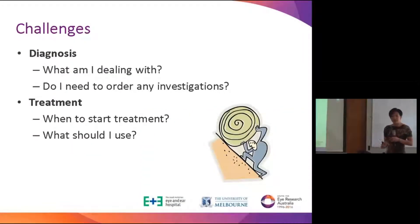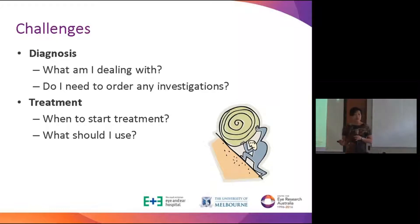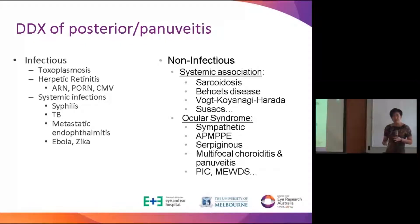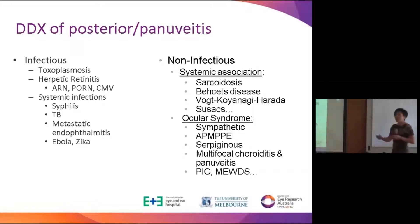The major challenge, particularly with acute posterior uveitis, is determining whether it is infectious, because most of our treatments for autoimmune cases involve immunosuppression — whether topical eye drops, injections, or tablets — and that's the last thing you want to give a patient with an infectious cause for their uveitis. So how do you tell between infectious and non-infectious causes?